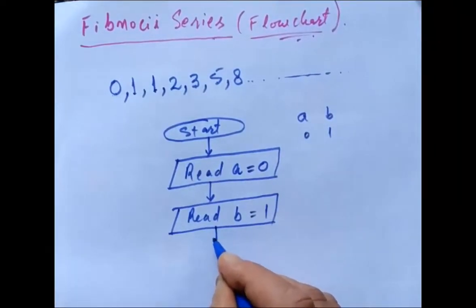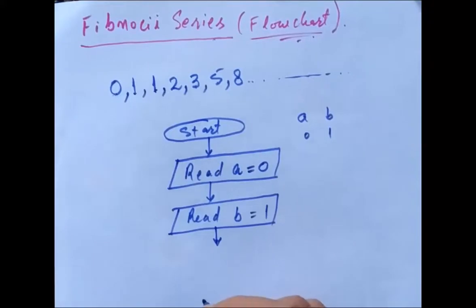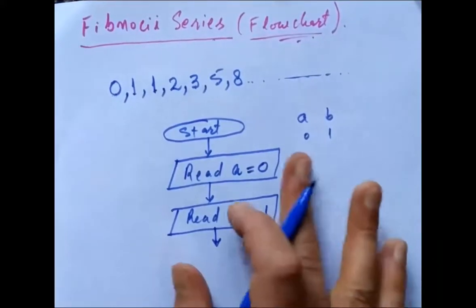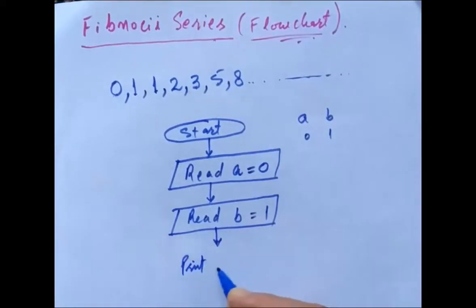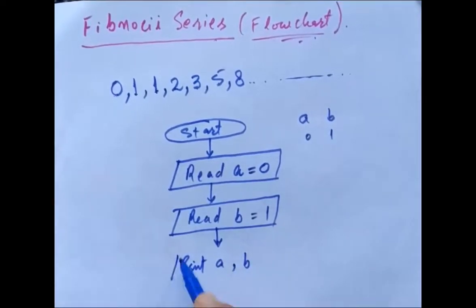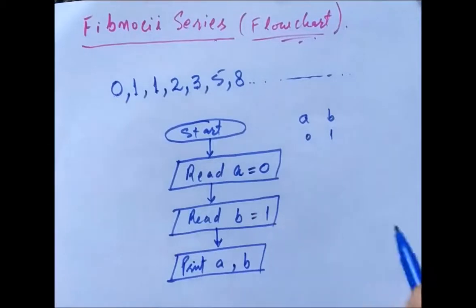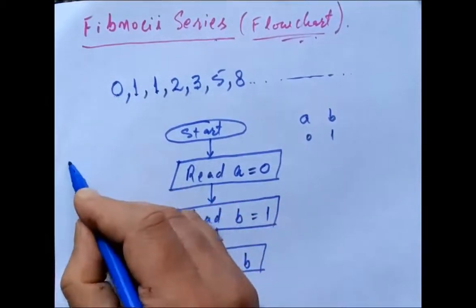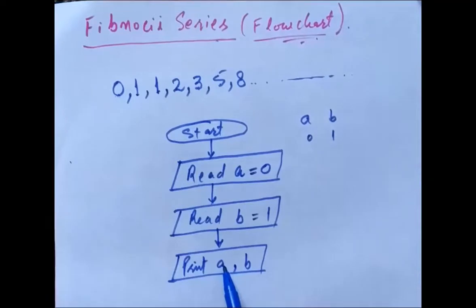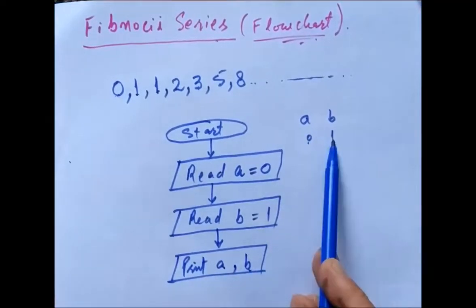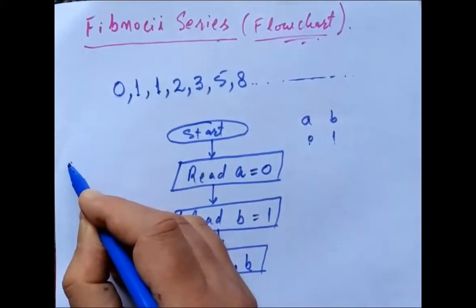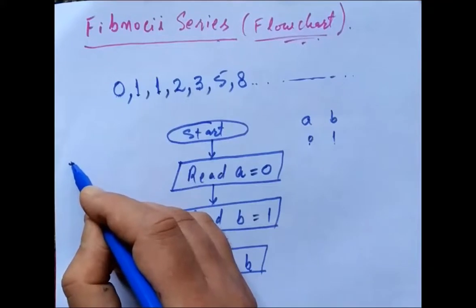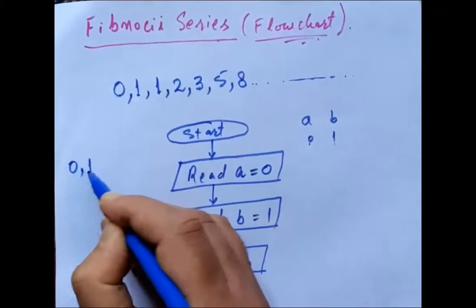Then I first have to print 0 and 1. I will write: print a comma b. What is stored in a? It is 0. What is stored in b? It is 1. So I have written print a comma b — a is 0, b is 1, both will get printed.